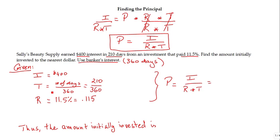Well, what's given is that the interest equals 400. We're going to substitute 400. The rate is 0.115, and the time, multiply by 210 divided by 360.